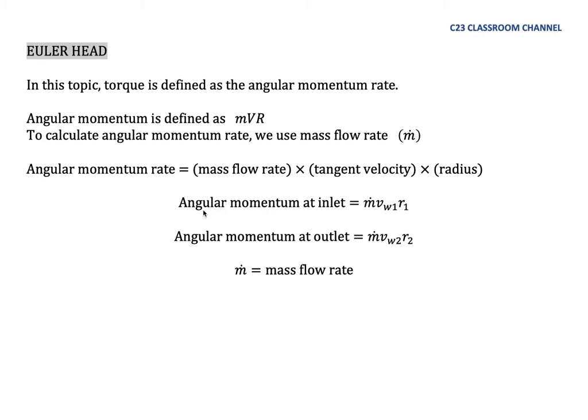So we could say that angular momentum at inlet is M dot, V world 1, and R1. And angular momentum at outlet is M dot, mass flow rate, V world 2, and R2.